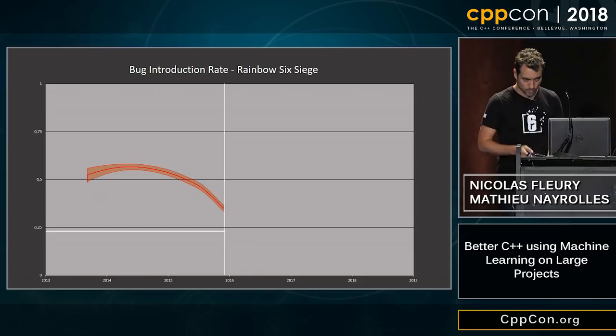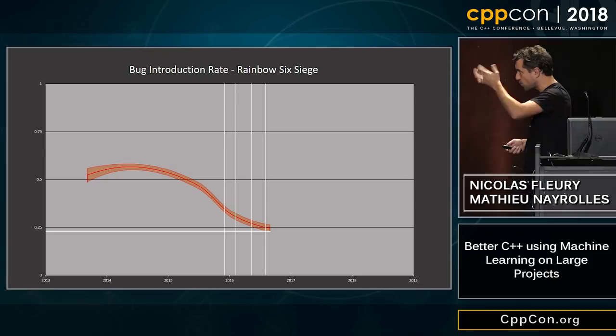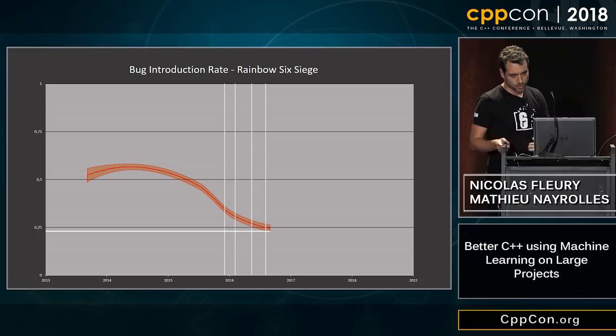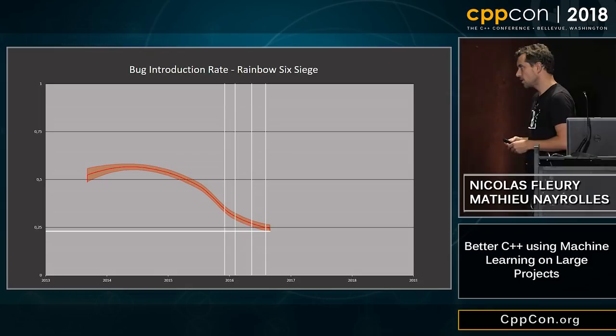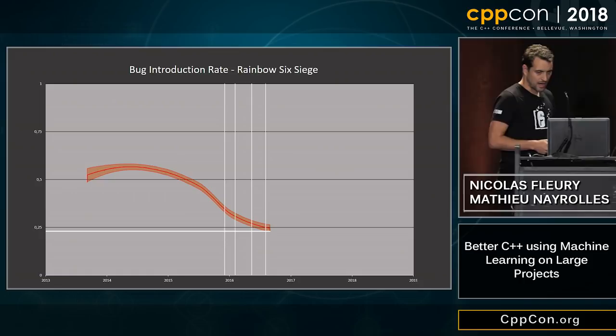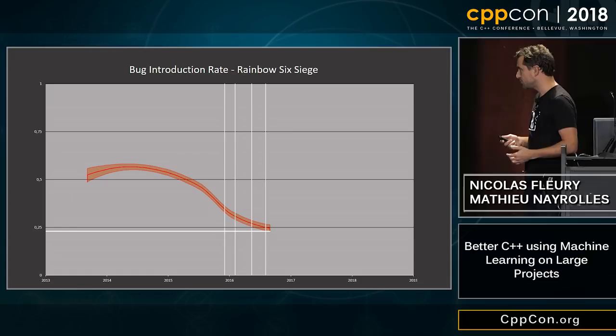Then the game was released and we began releasing seasons — the other white lines. Rainbow Six Siege forks its main trunk every three months, stabilizes for about a month and a half, and ships to players with new characters and gadgets. We can see that as we learned to work on a live game, we became more and more able to introduce fewer bugs per commit.